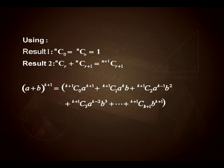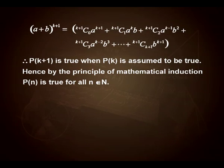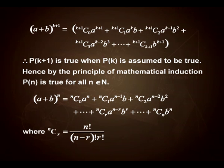Is that not what we were aiming at? We were looking at proving P(k+1) to be true, and this has been proved based on the assumption that the result was true for n = k. In the language of PMI, we conclude: P(k+1) is true whenever P(k) is assumed true, and therefore by principle of mathematical induction the result is true for all n belonging to natural numbers. The binomial theorem is proved.